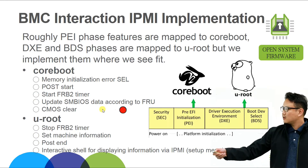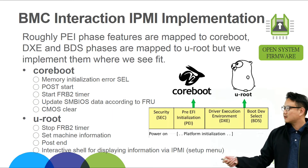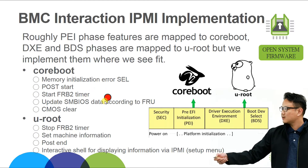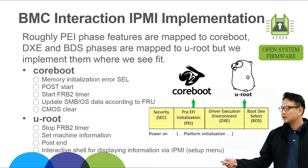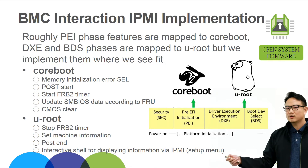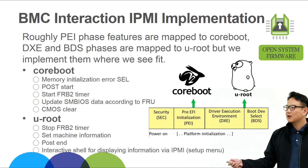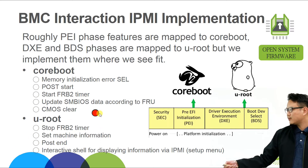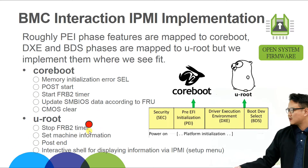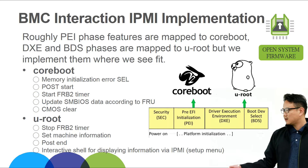So roughly, in CoreBoot, we chose to implement things like memory initialization error SEL, POST start, FRB2 timer start, and update SMBIOS data according to FRU. It's pretty straightforward to update SMBIOS in CoreBoot. For clear data, in CoreBoot right now we simply reset the RTC data, but in the future, if VPD data can be written in U-root, we may also reset VPD data. In the U-root part, we implement stop FRB2 timer, set machine information — pretty straightforward in U-root, which can read SMBIOS and set machine information to system firmware — and setting POST end.